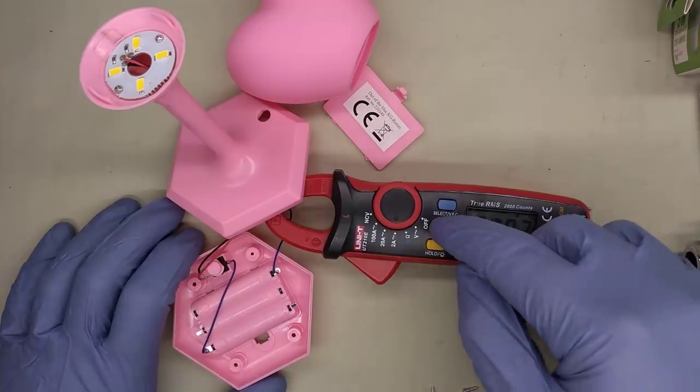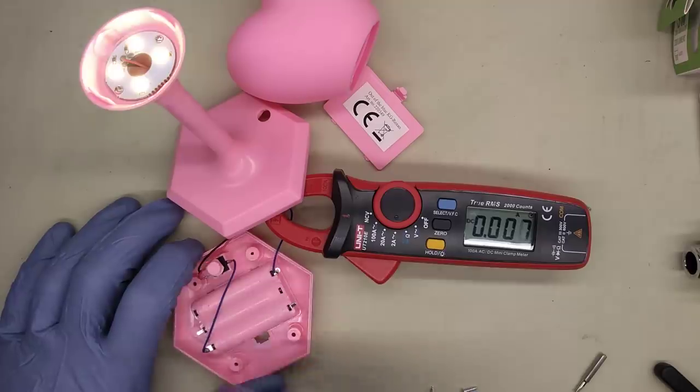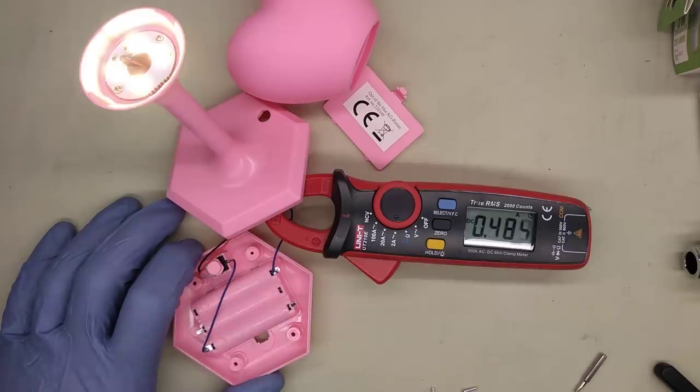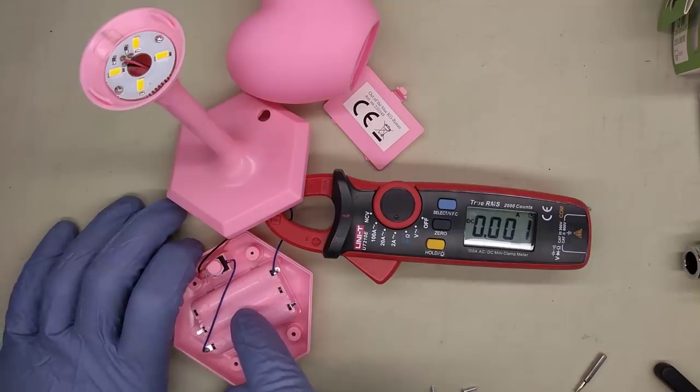So the circuitry is different to what I was expecting. When you press the button once, it lights at low level, which is about 122 milliamps. When you press it again, it goes up to 480 milliamps. It's rapidly dropping because that's quite a lot of current to be drawing from AAA cells. They're not going to get a very long runtime.